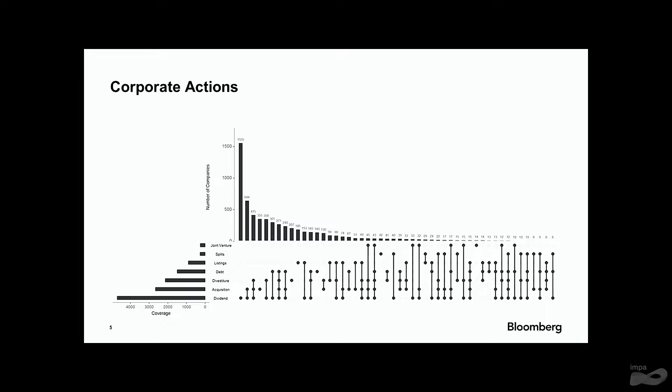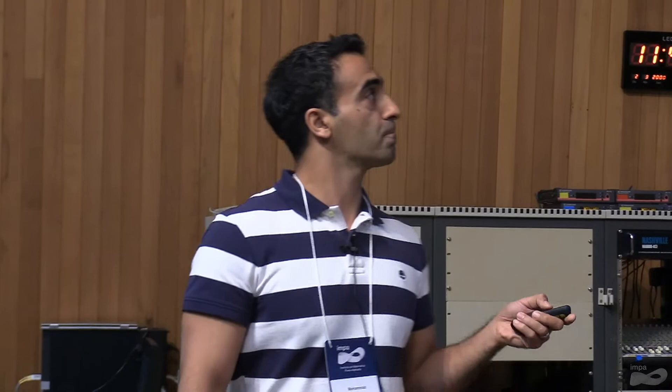We look at joint venture. We are interested to predict this if we can. You see how these companies, what kind of corporate actions they have. The most common thing is most of these companies have only dividend and they never do anything. We do publish news about them, but they never have acquisition, divestiture, or joint venture. So essentially, whatever we publish goes nowhere for this. But we do have a good chunk of them do have acquisition and divestiture. These are the cases that we are interested to predict.